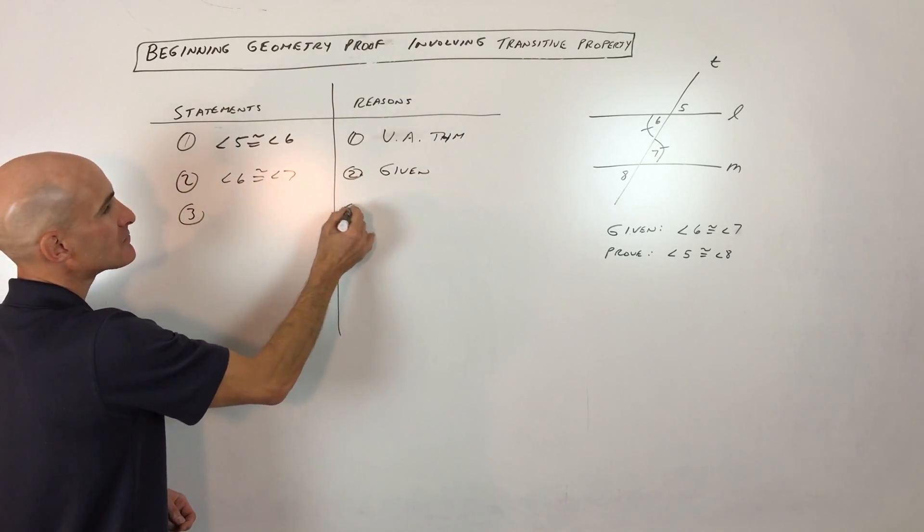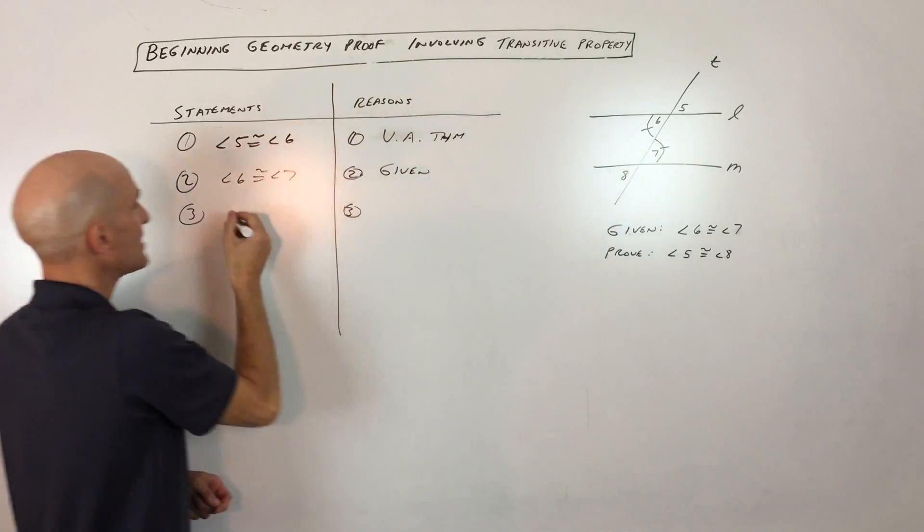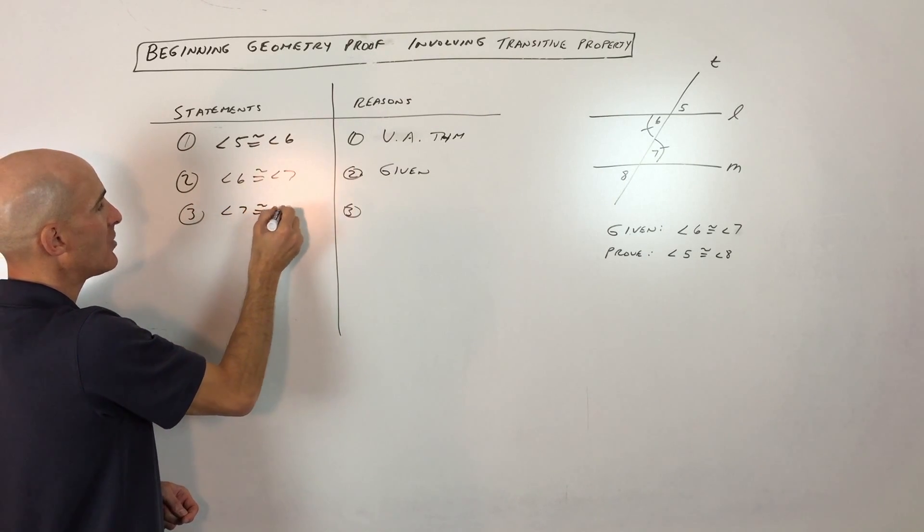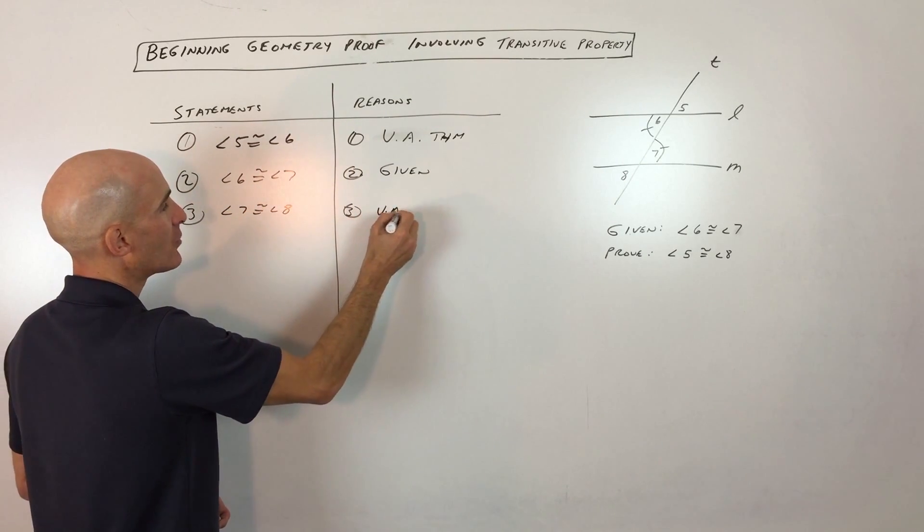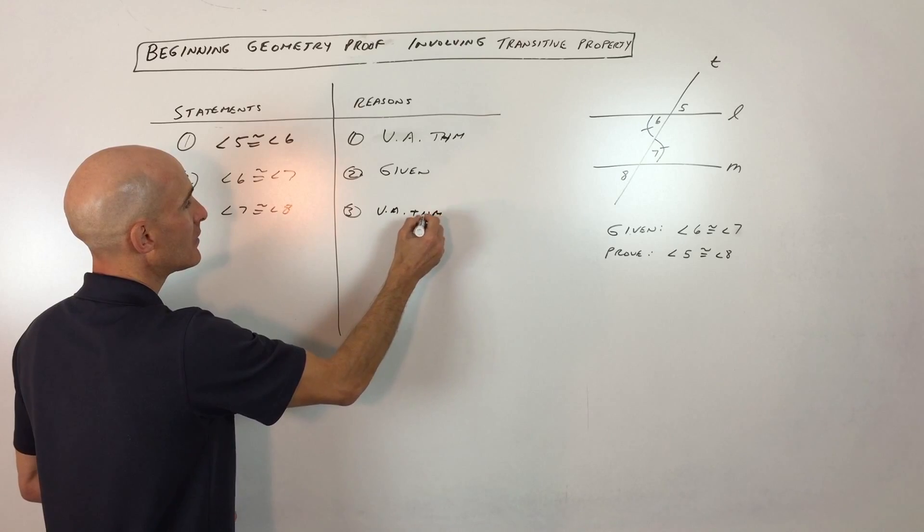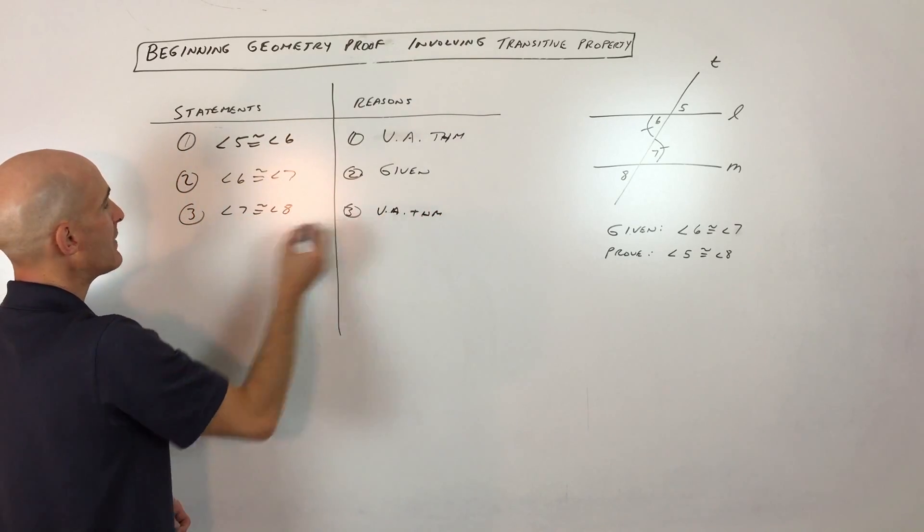Step number three, we know that 7 is congruent to 8. Angle 7 is congruent to angle 8. And again, that's the vertical angle theorem. Vertical angle theorem.